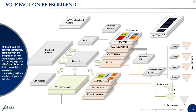Looking at the 5G impact on the RF front end: it is becoming very complex with the integration of new technologies like carrier aggregation, MIMO, and dual connectivity. The Wi-Fi/Bluetooth module antenna may be shared with the diversity receive module. The 5G PMID will be implemented in the power amplifier module. Separately, we have the millimeter wave antenna-in-package connected to a separate millimeter wave baseband modem — we need a separate modem for 5G — where the antenna is integrated together with the transceiver IC and potentially other front-end components.